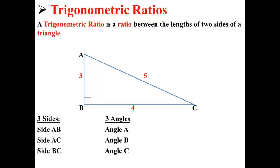In summary, this triangle has three sides and three angles. It has sides AB, AC, and BC, and it has angles A, B, and C.